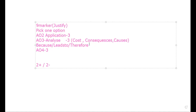AO4 evaluation means you must identify drawbacks as well as good points — both sides must be present because this is a justify question. Evaluation is about the negative consequences and impacts you write. Sometimes it could include a small conclusion, but normally for a nine-marker you don't need a conclusion — just two positives and two negatives.